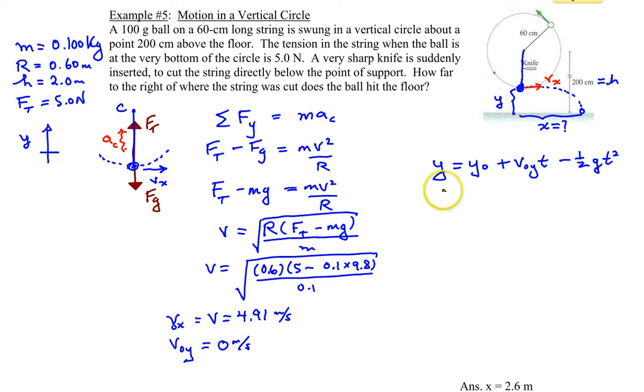So let's assume that the final position is 0 and the initial, we'll call that y0, is this height. Now this is, we have a 60 centimeter radius. So this distance here is 0.6 and then from the top all the way down is 2 meters. So we need to find that y0. So the y0, this is obviously not drawn to scale, is 2 meters minus 0.6 meters, which gives you 1.4 meters. So the ball at that particular point in time is 1.4 meters above the ground.